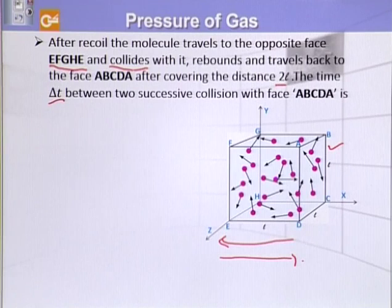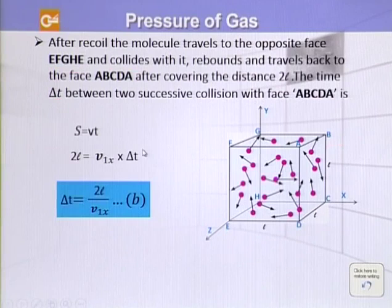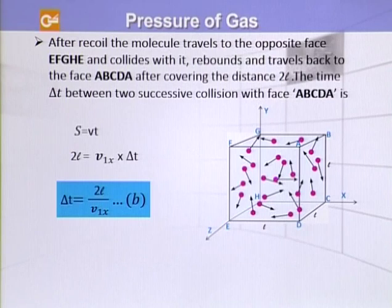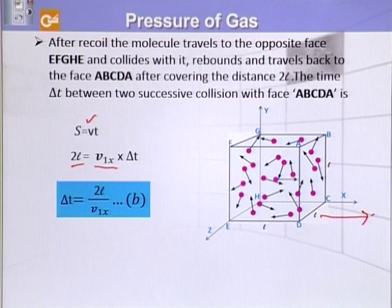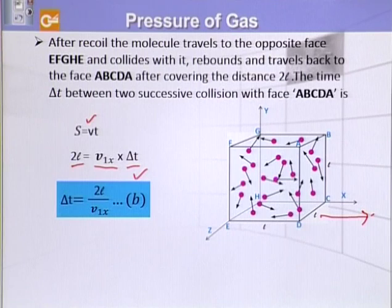So from here we can see what the collision frequency is — that is, how many times per second this molecule collides with a particular face. If we want to find the collision rate, we calculate the distance using the equation of motion: S = V·T, where S = 2L. Since it is moving along the X direction, we consider its X component. The time interval delta T = 2L / V1X, and we call this equation B.